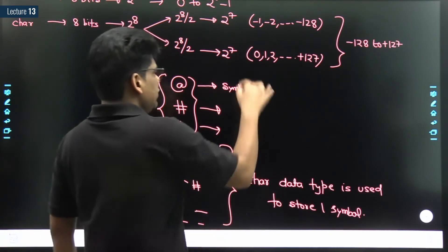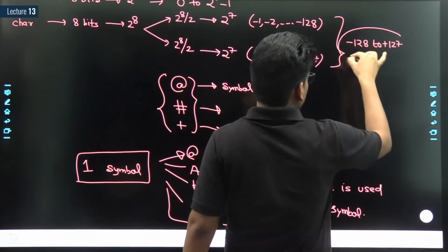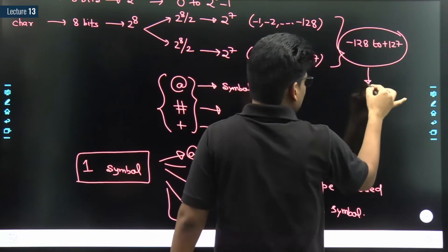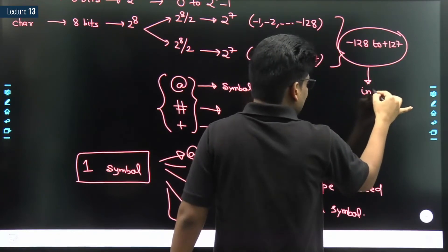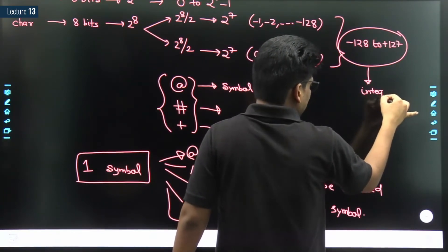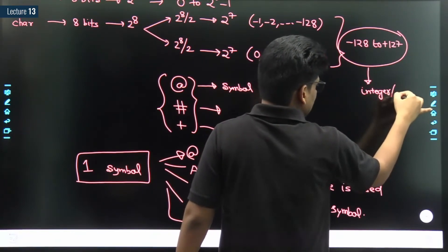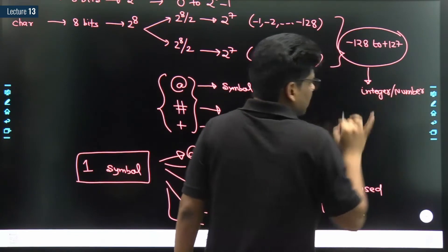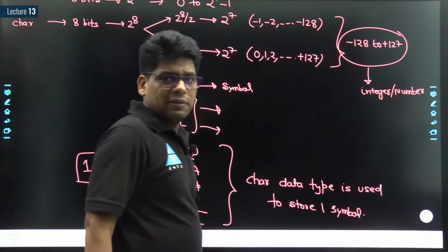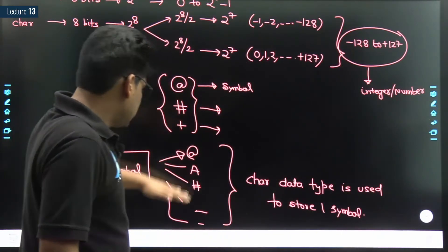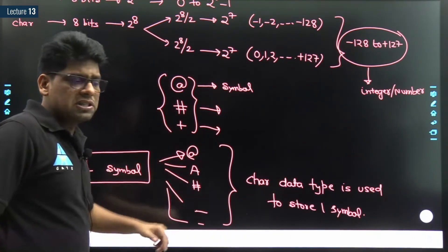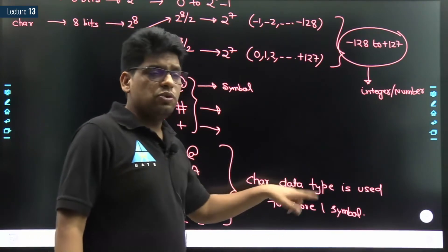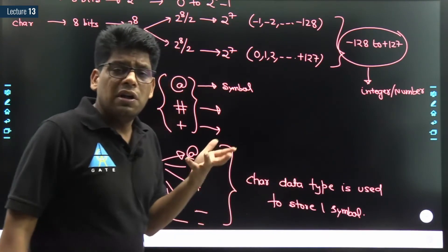Just a few minutes ago you said the range of character is minus 128 to 127 - those are integers, they are numbers. And now you are saying that character data type is used to store symbols.